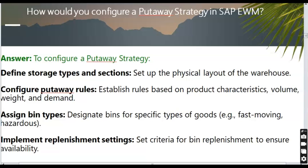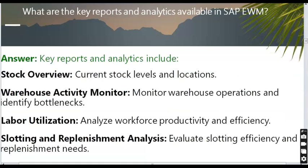How would you configure a put-away strategy in SAP EWM? To configure a put-away strategy: define storage types and sections to set up the physical layout of the warehouse, configure put-away rules based on product characteristics such as volume, weight, and demand, assign bin types for specific goods such as fast-moving items, and implement replenishment settings to ensure availability.